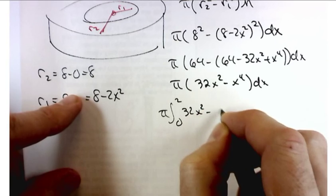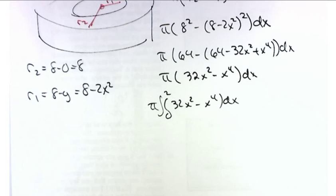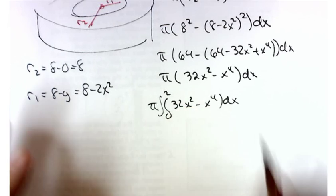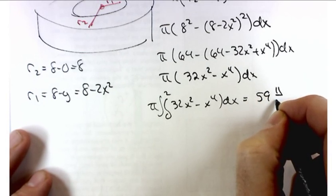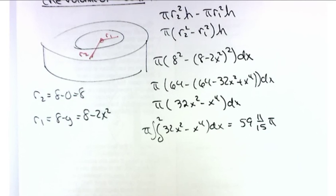The answer in this case is 59 and 11/15 — don't forget the units of pi. Whenever there is a gap between the axis of rotation and the function, you'll use the washer method, meaning you'll need R2 squared minus R1 squared. That's a wrap on these problems.